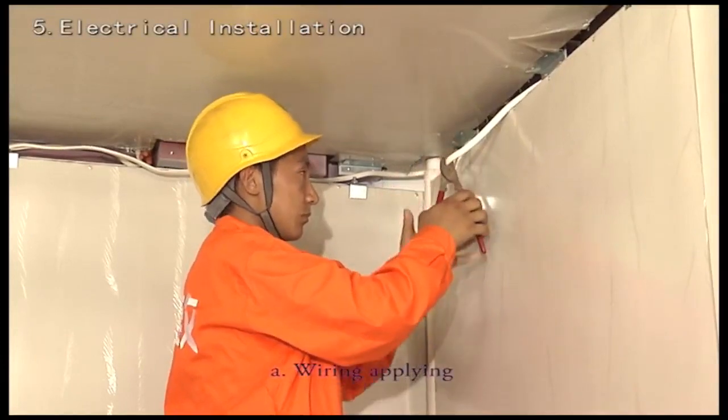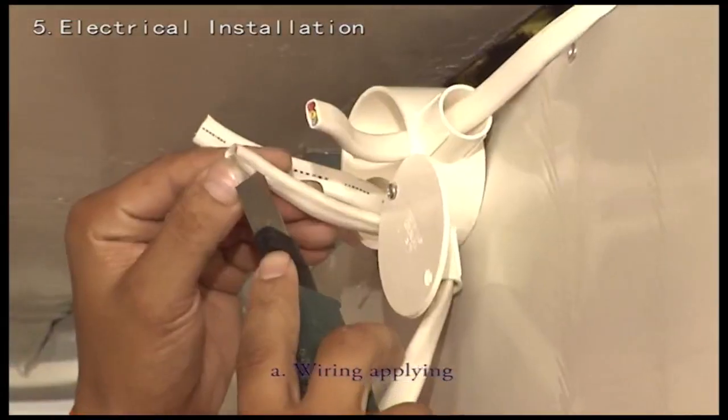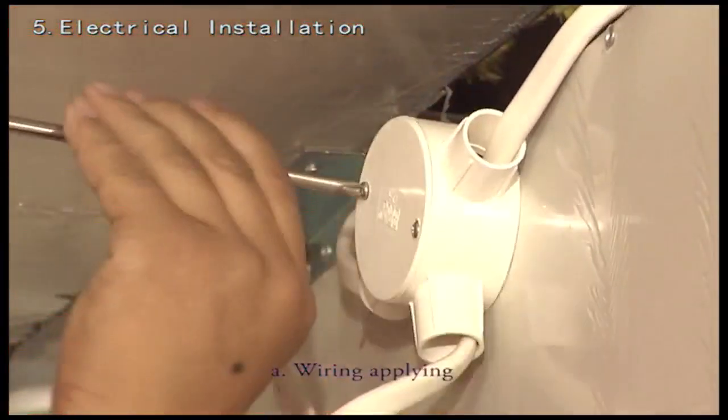Wiring applying. Identify the wall with sockets and switches. Then connect wires from the panel and roof frame. Install in a trigeminal box and hide inside the structure at the top.